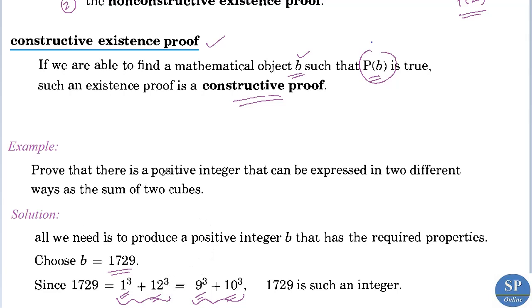We just found such a positive integer that satisfies these properties, so we proved this. We found b such that p of b is true — here p of b means we can express b in two different ways as the sum of two cubes — and we proved this by finding the number 1729.